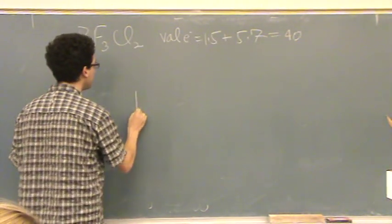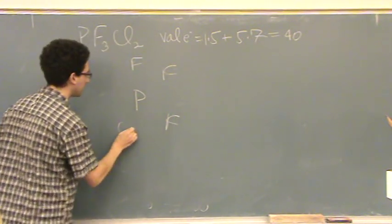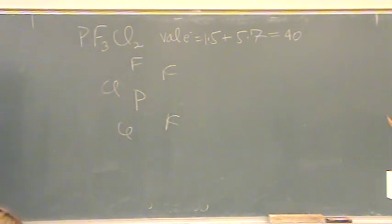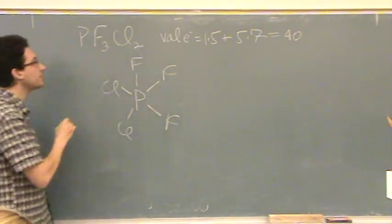Phosphorus in the middle. Fluorine, a fluorine, a fluorine, a chlorine, a chlorine. What I like to do is draw the bonds first. Two, four, six, eight, ten of 40 total valence electrons.